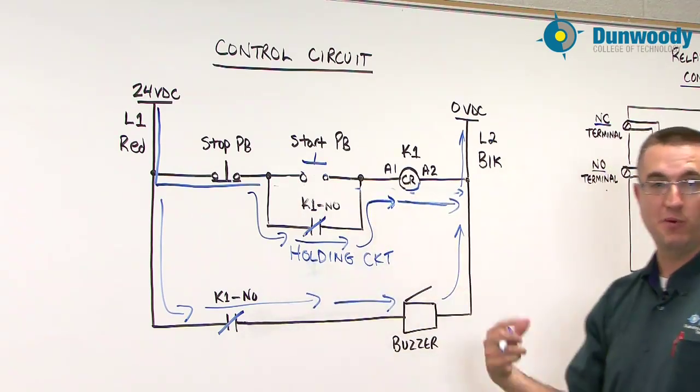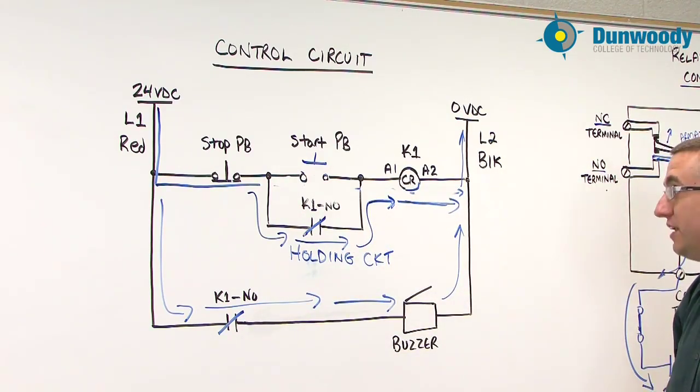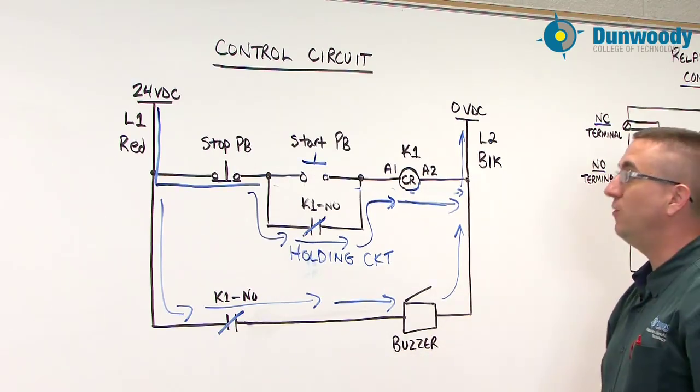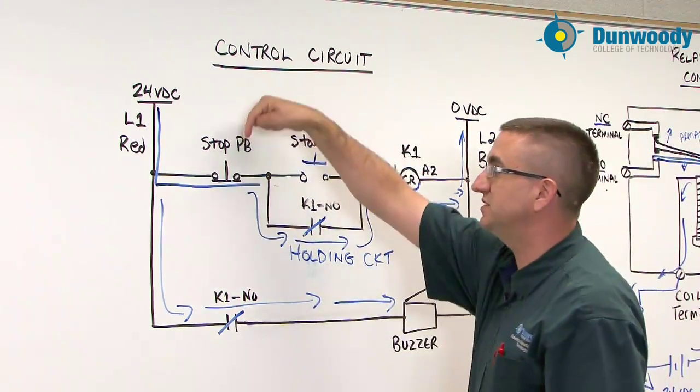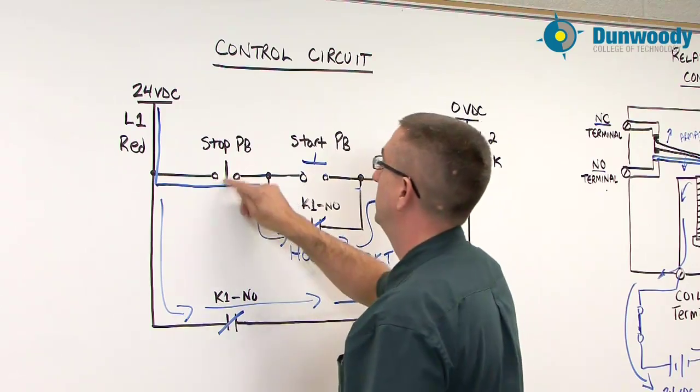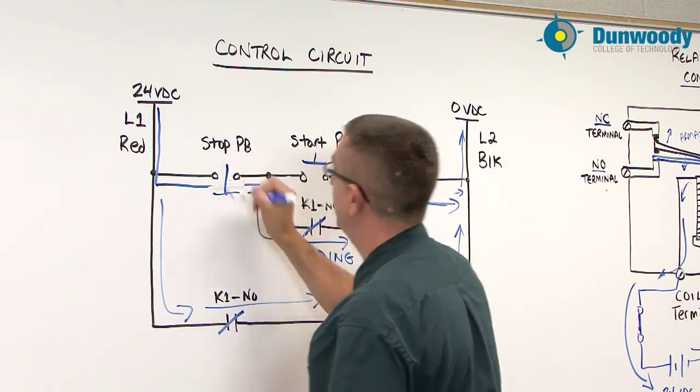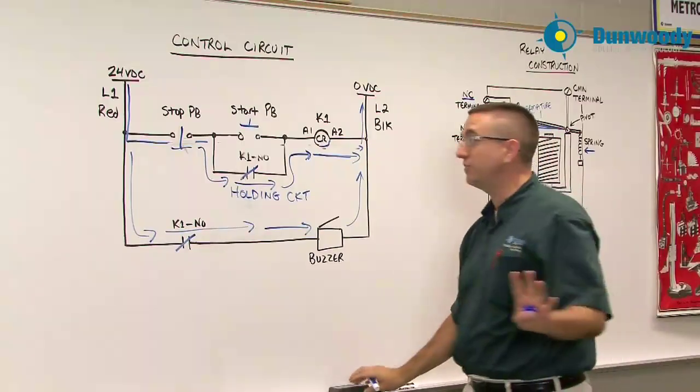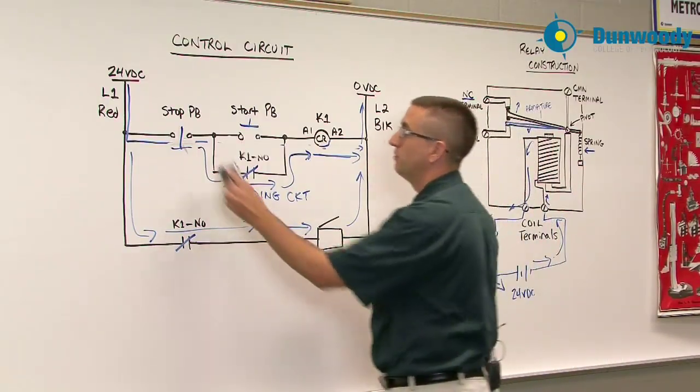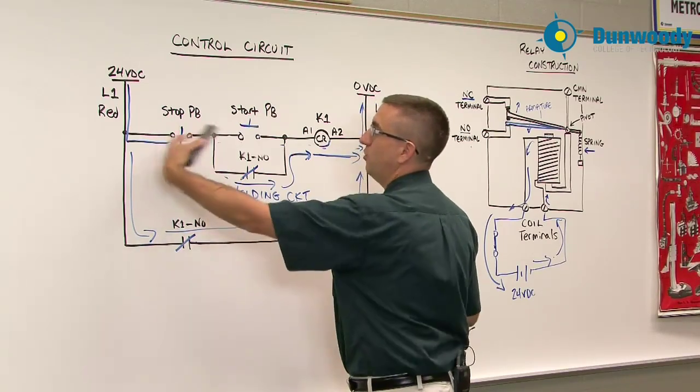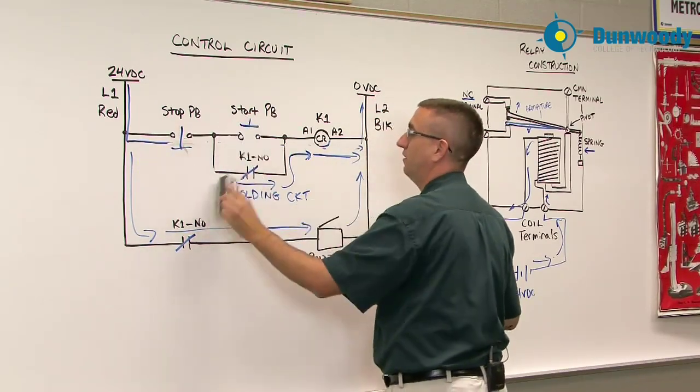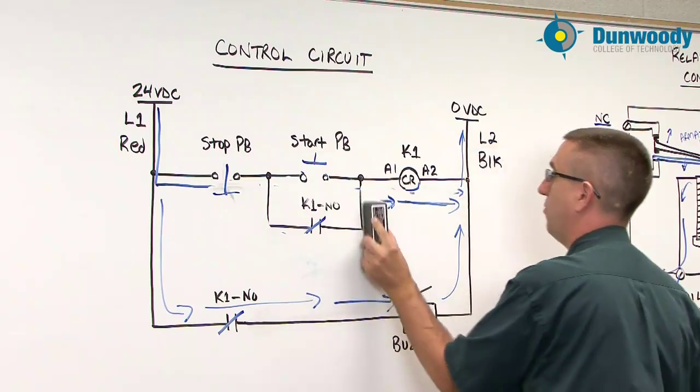So both of the contacts are going to remain closed. And now if I want to shut this circuit off, the only way to shut this circuit off is to press the stop push button, which is a normally closed push button. It'll look like this now. That's going to release all of the current. We're not going to have any current. We're going to remove current from our circuit. There's no way for electrons to flow through here.